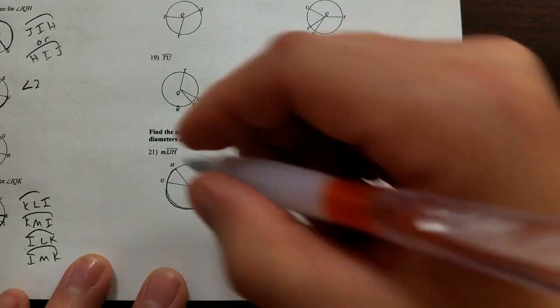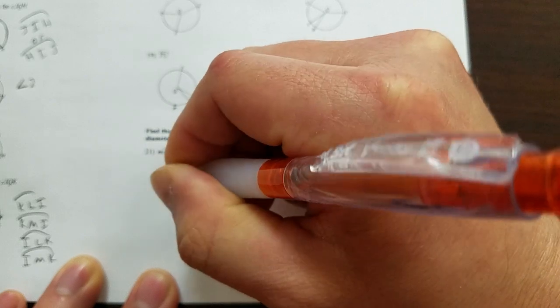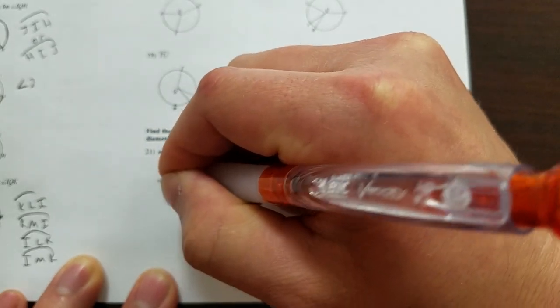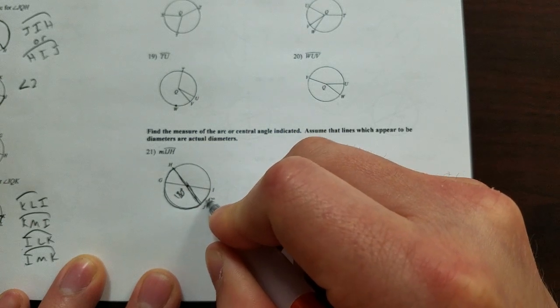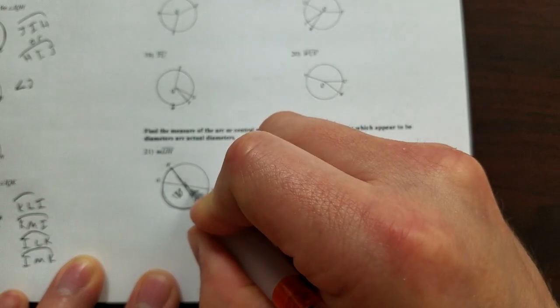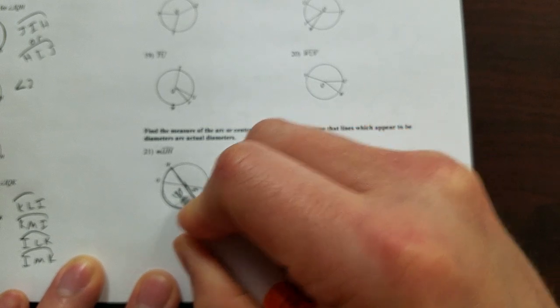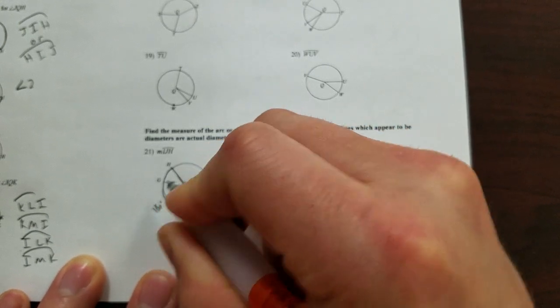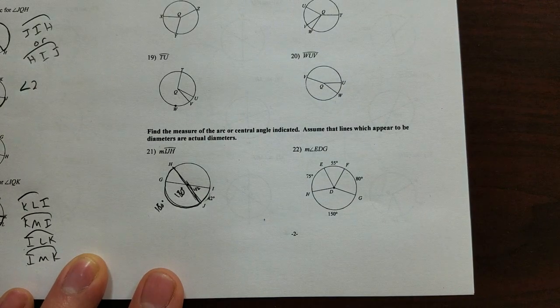Well if this is a diameter like it says, HJ here, then it would be 180 degrees because it's a straight line. Well if that's 180 and it tells us this is 42, then we know that this central angle is 42 because it matches and we know that this portion of the arc over here is 180 because it matches the central angle which in this case is a diameter.